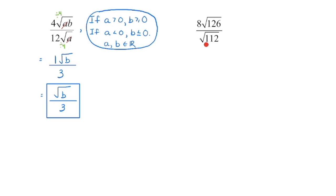This next example does not contain any variables in the radicand, so we don't need to worry about restrictions. We begin by dividing the coefficients: 8 divided by 1 is 8. However, 126 divided by 112 does not go evenly. To be completely simplified, we also cannot have any fractions or decimals left in the radicand. So we can't just divide these directly. Instead, we should simplify each radicand first so the numbers aren't quite so large.